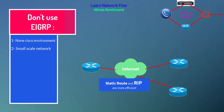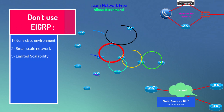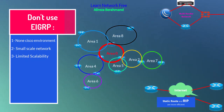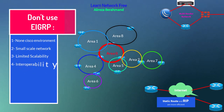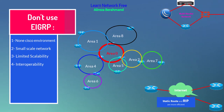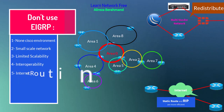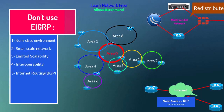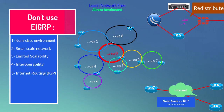Number three: limited scalability — EIGRP may not be the best choice for extremely large networks requiring specific scalability features not supported by EIGRP. Number four: interoperability — if you need to ensure interoperability with non-EIGRP networks, the process of redistributing routes can be complex. Number five: internet routing — EIGRP is not used for internet routing, as BGP is the standard protocol for that purpose due to its extensive scalability and ability to handle complex routing policies.